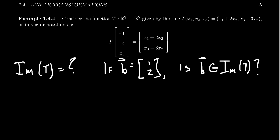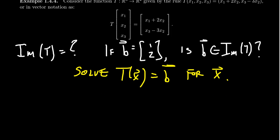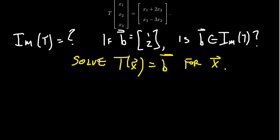So what we're trying to do is we're trying to solve the equation T(x) = b for some x. Can we find a vector x that when you plug it inside of T, you'll get out the vector b? Can b come out of this transformation? Well, what is T(x)? T(x) is this formula right here. You're going to get x₁ + 2x₂. You're going to get x₃ - 3x₂. And this is supposed to equal b, which is specifically (1, 2).